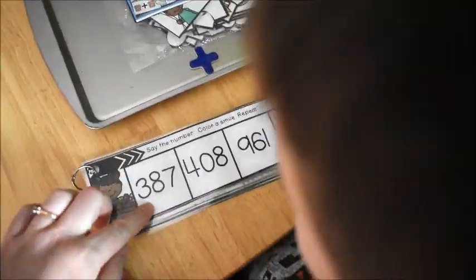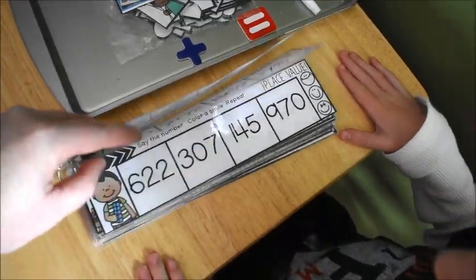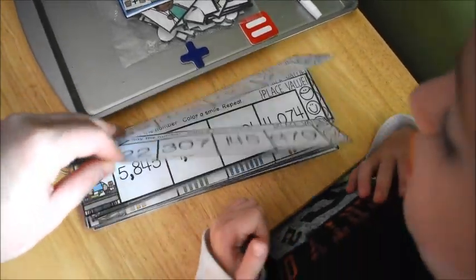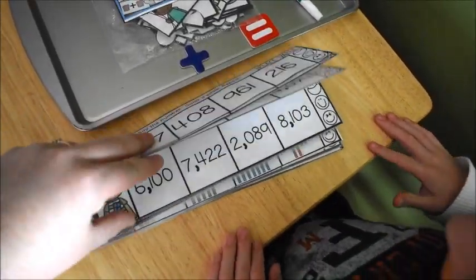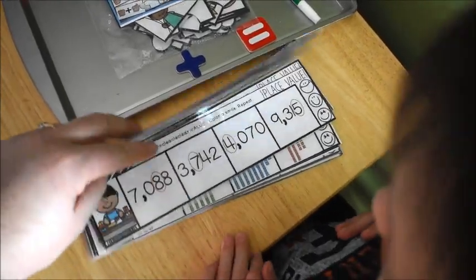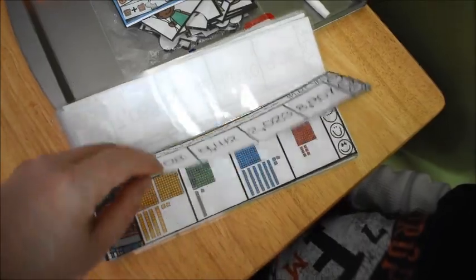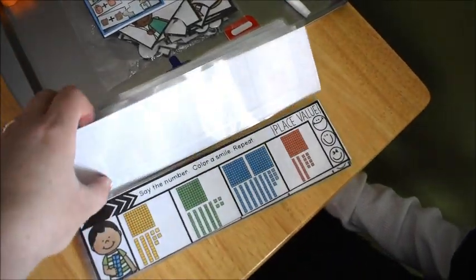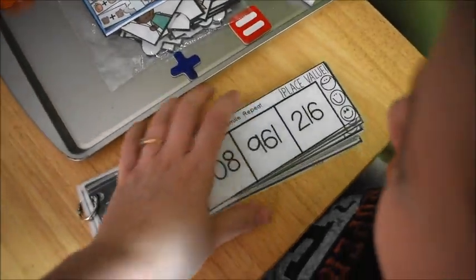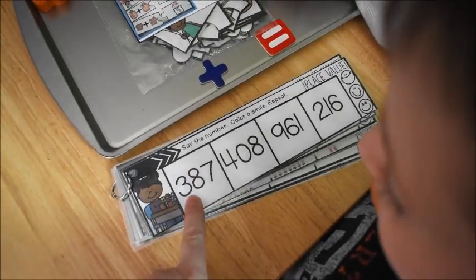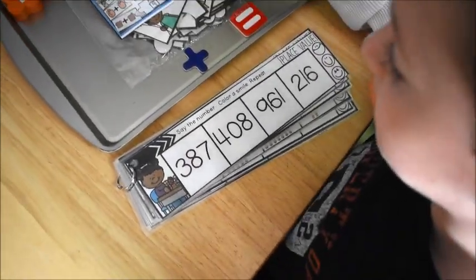These numbers. So we're going to start real easy with hundreds. Okay. And then this also has thousands. And then when we get to here, we're going to say the place value. But let's just start easy. And what you're going to do is you're going to touch each box and say the number.